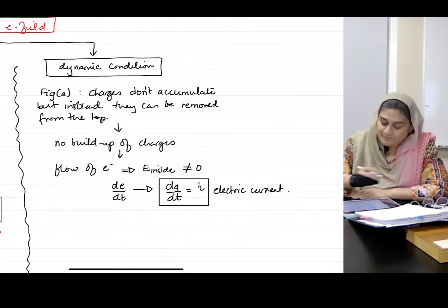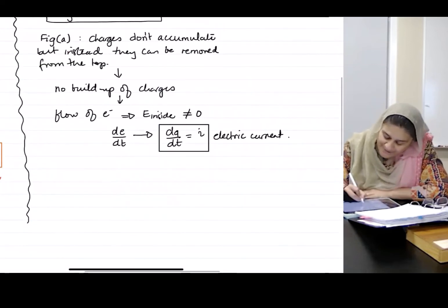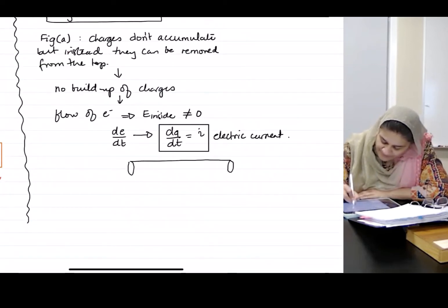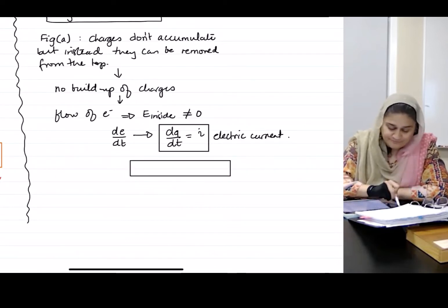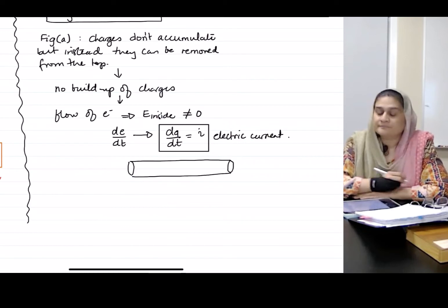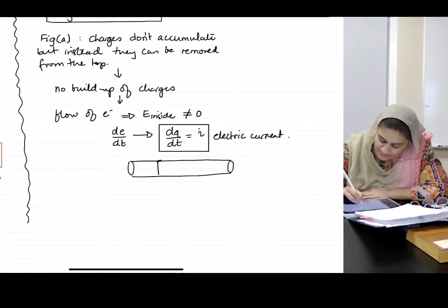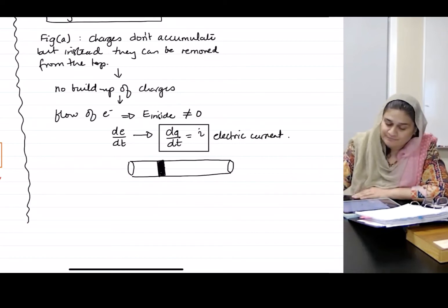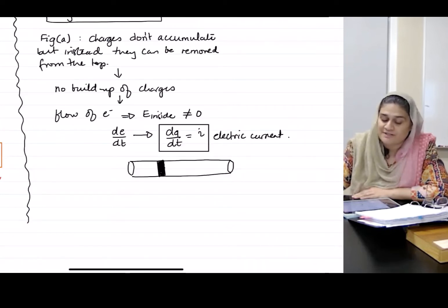In other words, what I'm saying now is that if I had a wire, DQ is the charge that passes through a particular small surface in time delta T.